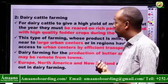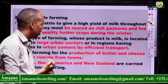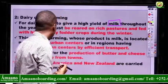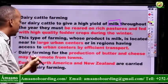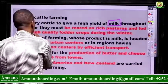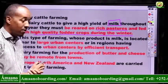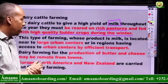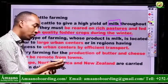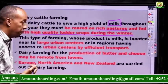The last point of today's lesson is dairy cattle farming. The main objective of the cattle is to provide milk. For dairy cattle to give a high yield of milk throughout the year, they must be reared on rich pastures and fed with high-quality fodder during the winter. If you provide very good food and pasture, you get good milk. Less food means less milk; very good food, pasture, and fodder means very good milk.